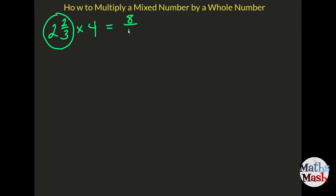So we have 8 over 3, and now we multiply by 4. Any whole number is actually over 1, and now we just cross multiply like this.